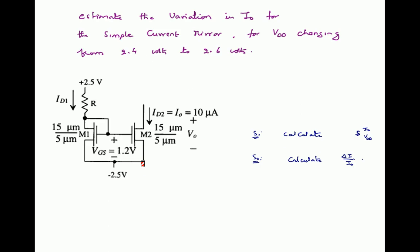Problem: Estimate the variation in I_out for a simple current mirror when VDD changes from 2.4 V to 2.6 V. The total change in VDD is delta_VDD = 2.6 − 2.4 = 0.2 V. The circuit is given with W/L = 15/5 micrometers and I_D1 (which is I_out) = 10 microamperes.